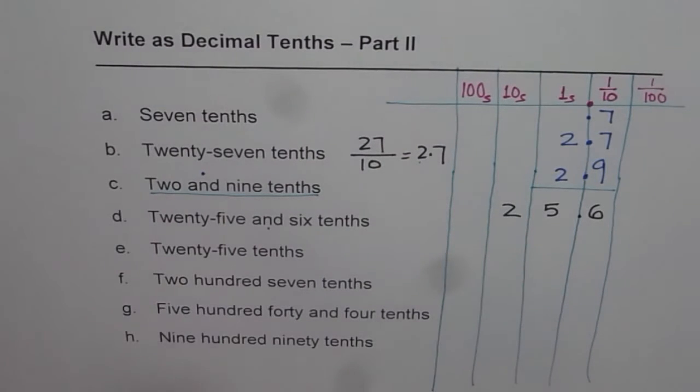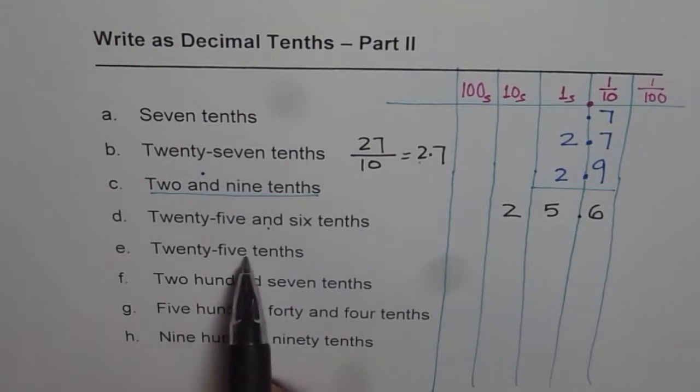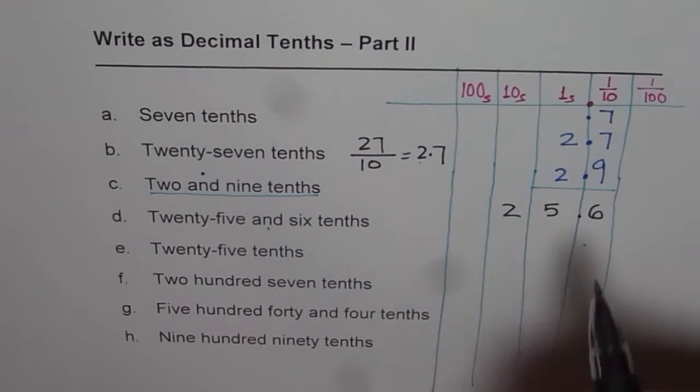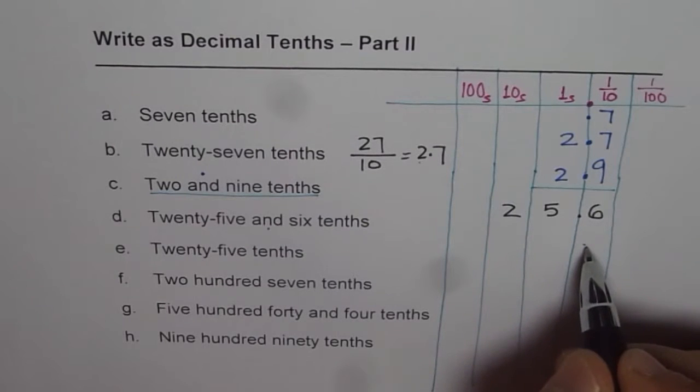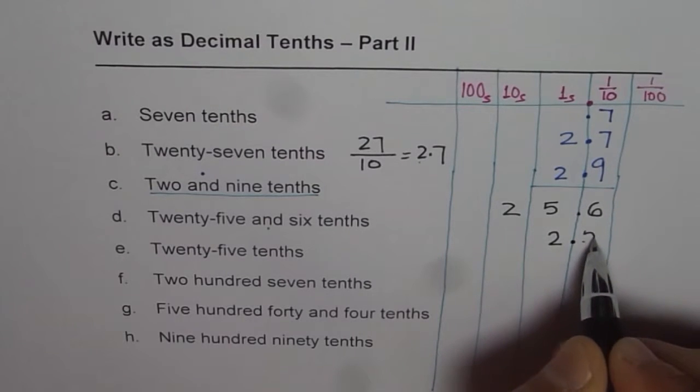But it becomes tricky when I write twenty-five tenths. Twenty-five tenths—both here. So when I am trying to write twenty-five here, two spills over. So I can write this as 2.5. That becomes twenty-five tenths.